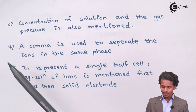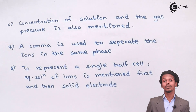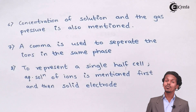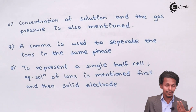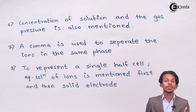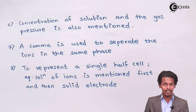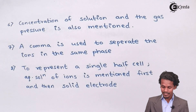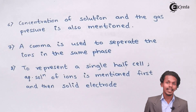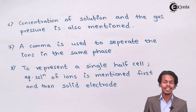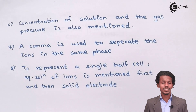The concentration of the solution and the gas pressure are also mentioned in the cell formula. We must mention the concentration of the aqueous solution being used. When a gas is present, we must specify the pressure at which the gas is present in the galvanic cell.